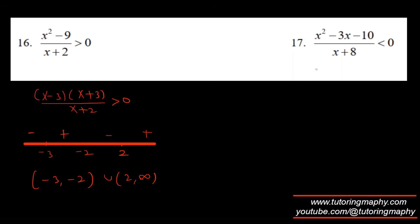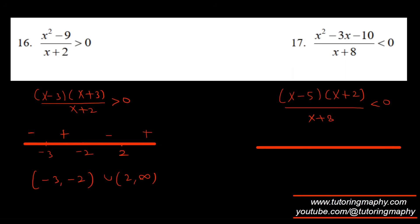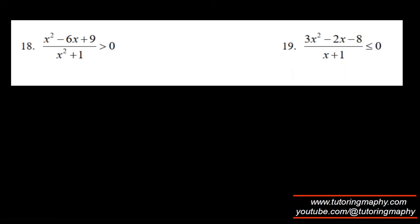For the next one, the expression factors as x minus five times x plus two over x plus eight, less than zero. Plot roots negative eight, negative two, and five on the number line. Testing x greater than five gives positive; signs alternate leftward: negative, positive, negative. The answer is negative infinity to negative eight union negative two to five.